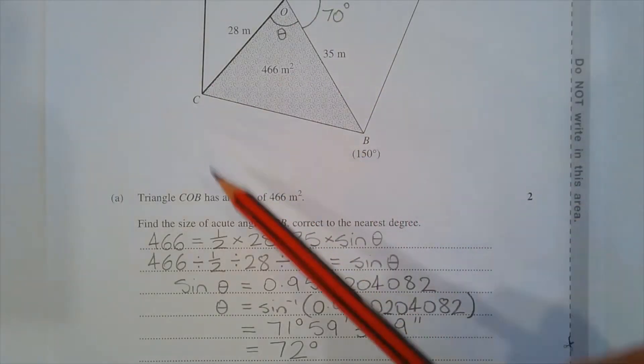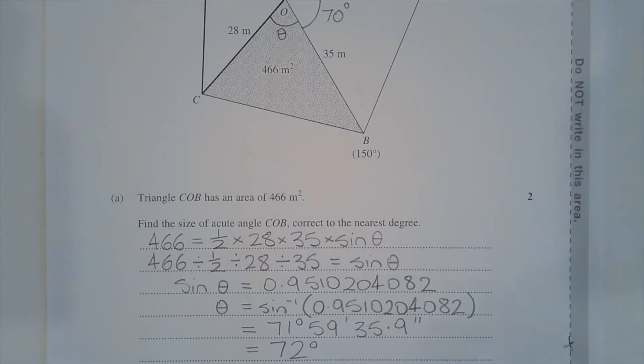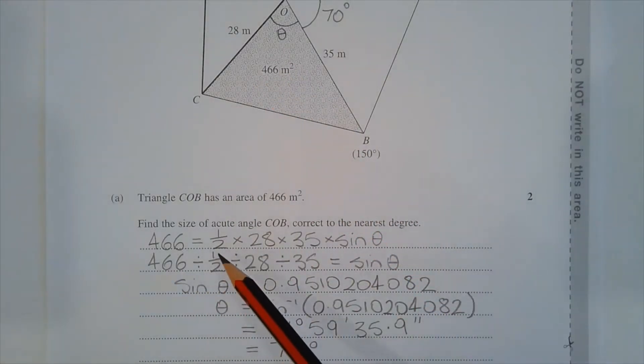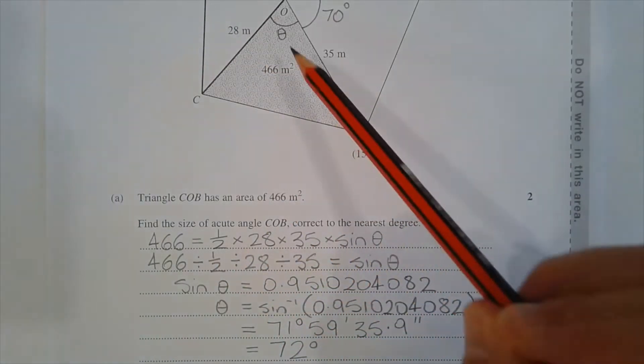In triangle COB, let the unknown angle COB equal theta. By the area rule of a triangle, the area, 466, is equal to half times 28 times 35 times sine of theta.